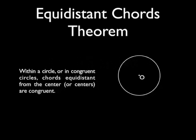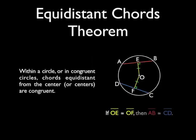Our first theorem for this video is the equidistant chords theorem. It states within a circle or in congruent circles, chords equidistant from the center or the centers are congruent. So what that means is if segment OE and segment OF are congruent, then the chords that are equidistant, segment AB and segment CD, will also be congruent.